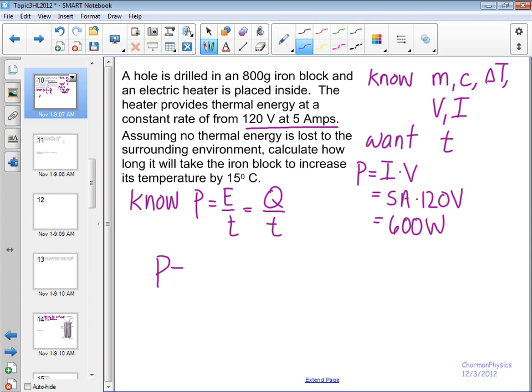And we know all the pieces for Q because we have mc and delta t. So what we end up with here is an equation that looks like this. We'll substitute mc delta t in for delta Q since we know what all these terms are, and we have an equation where we are looking for time and we have all the other pieces.